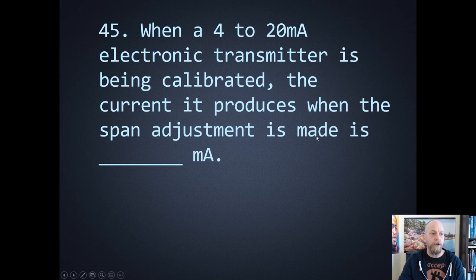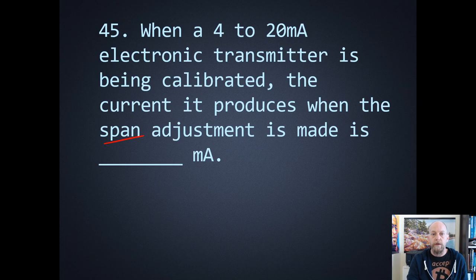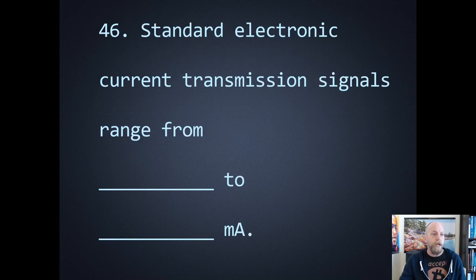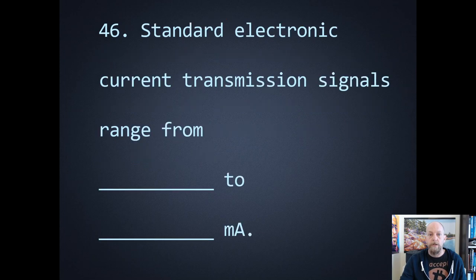When a 4 to 20 electronic transmitter is being calibrated, the current produced when the span adjustment is made — the span is the full range of values, but we're controlling the top end of the range. The top end of a 4 to 20 milliamp current is 20 milliamps. The zero would correspond to the zero potentiometer, and 20 would correspond to the span. Number forty-six: standard electronic current transmission signals range from 4 to 20.